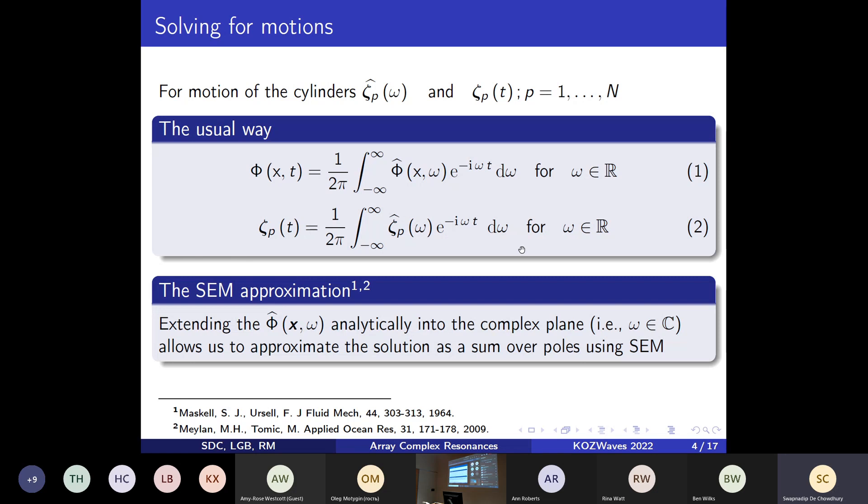That is a standard task as long as you have access to any standard boundary value problem solver dealing with real frequencies. But there is another way: if we can make an analytical extension of the radiation potential into the complex plane, it's possible to write down the solution as a sum over poles. That stems from the ideas in the singularity expansion method.